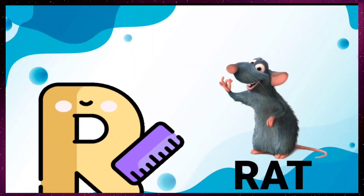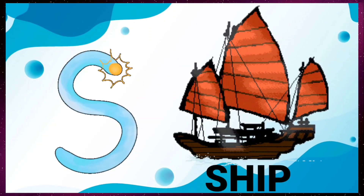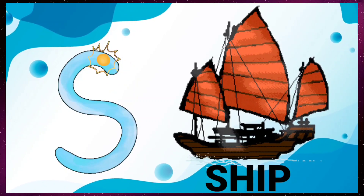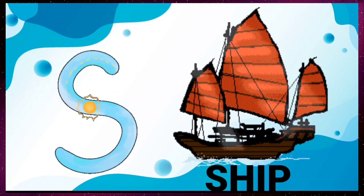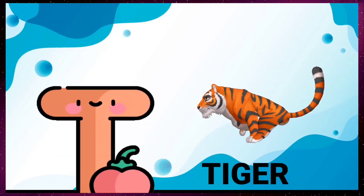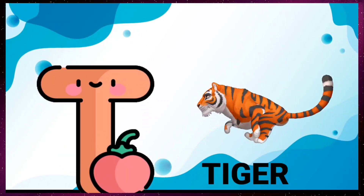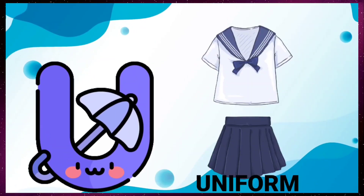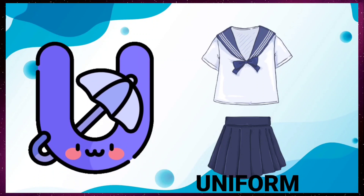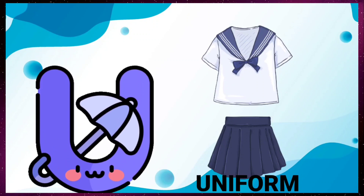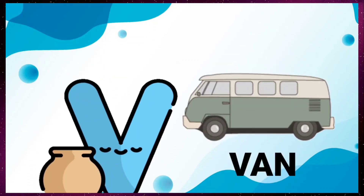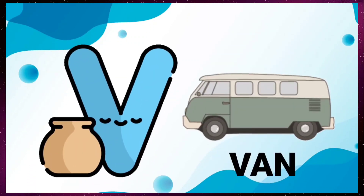R for rat, S for sheep, D for tiger, U for uniform, B for van.